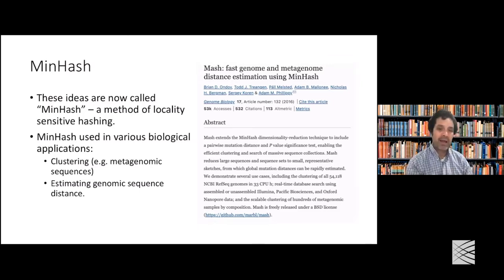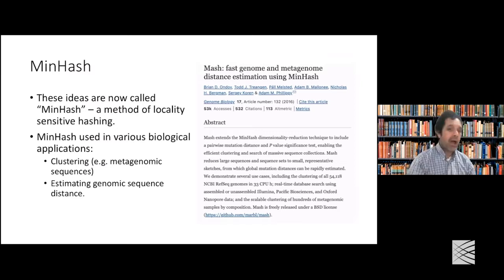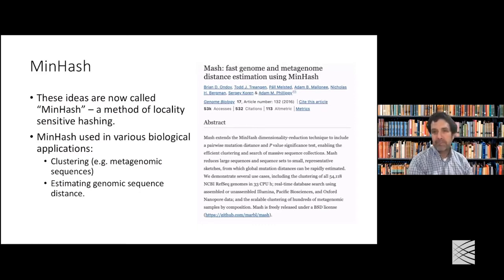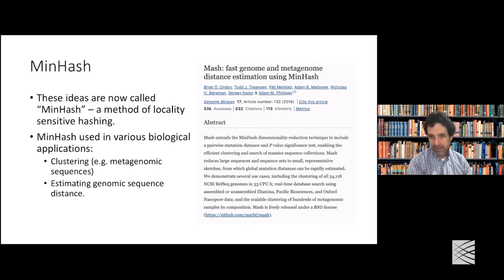Minhash is one of the ways to do locality-sensitive hashing, and in particular one that has been used in various biological applications. The paper I found most cited when I searched Google was the MASH paper from about five years back, which discusses this minhash dimensionality reduction technique and locality-sensitive hashing. We'll look at some of its applications a bit later.